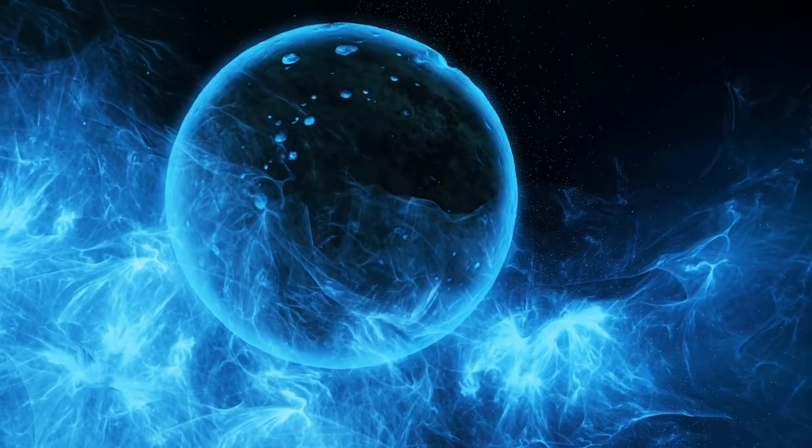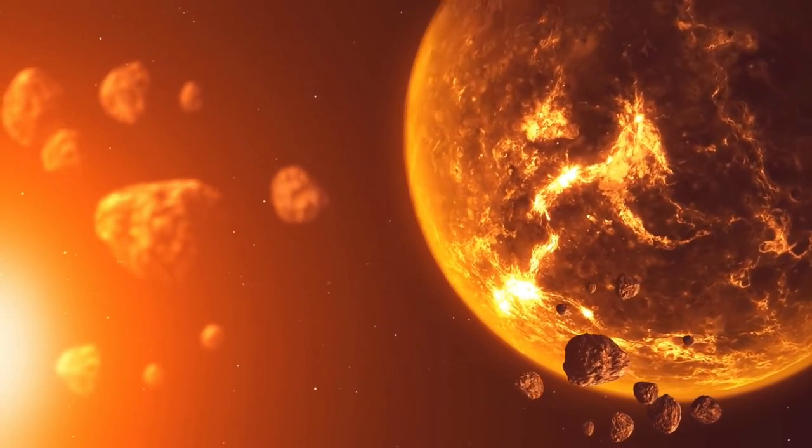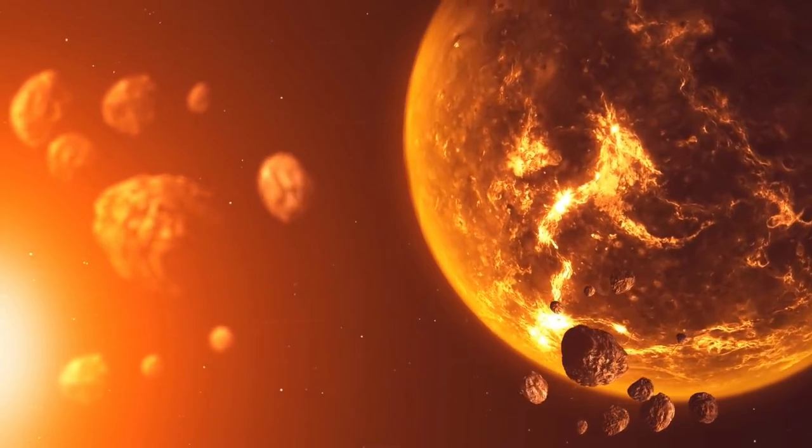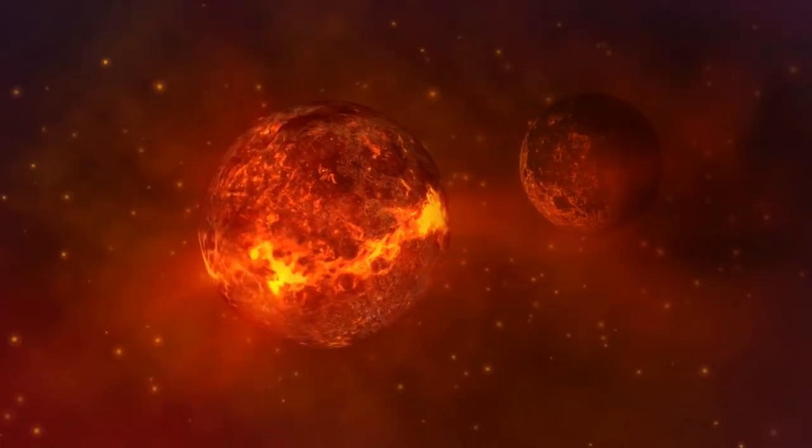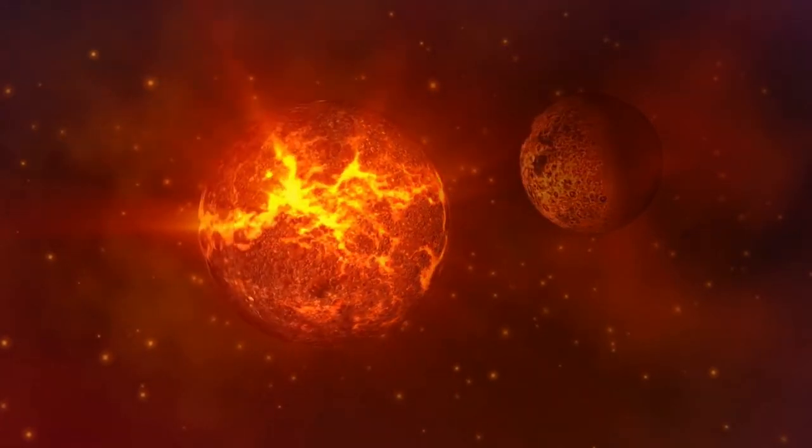Lava planets are super dense, larger than Earth worlds in close, hot orbits around their parent stars. Some of them, known as Chthonian planets, are likely the remnant cores of evaporated hot Jupiters.